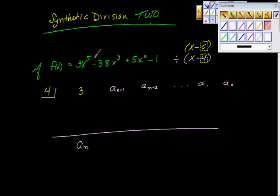So we have to insert that we have 0x to the fourth power, so we're going to put that 0 here. Then the next term should be to the third power, and that's negative 38 as the coefficient. We do have 5x squared,